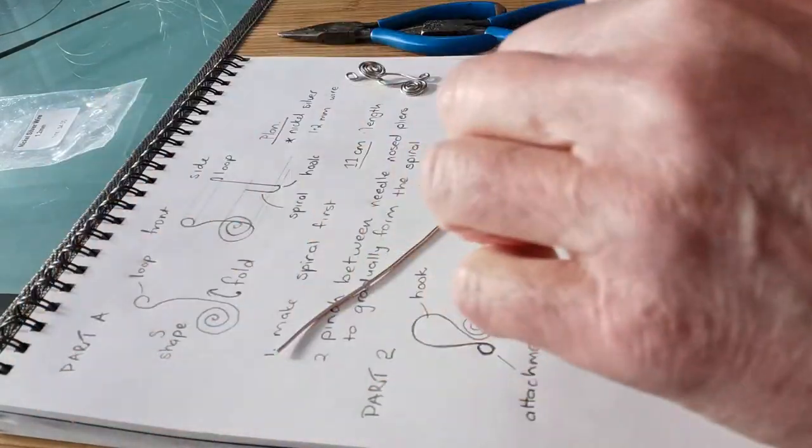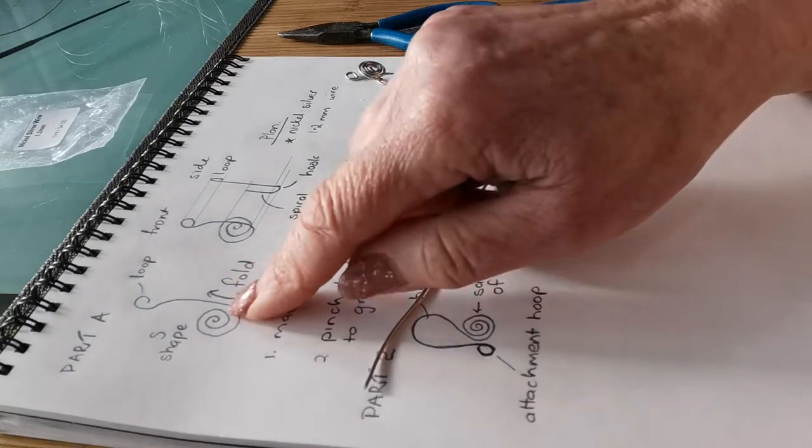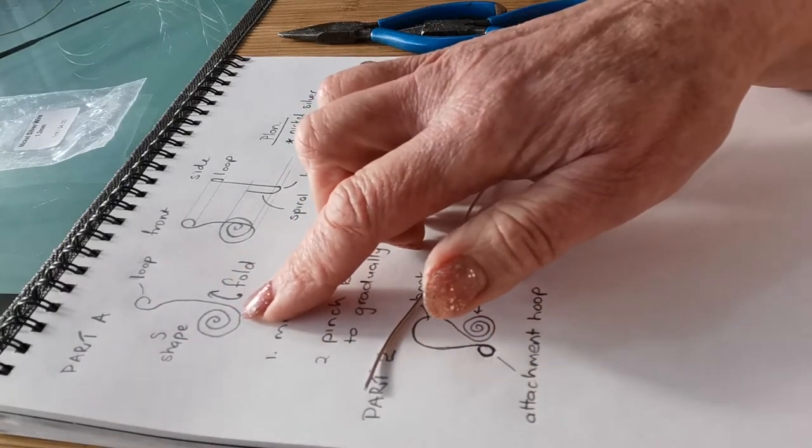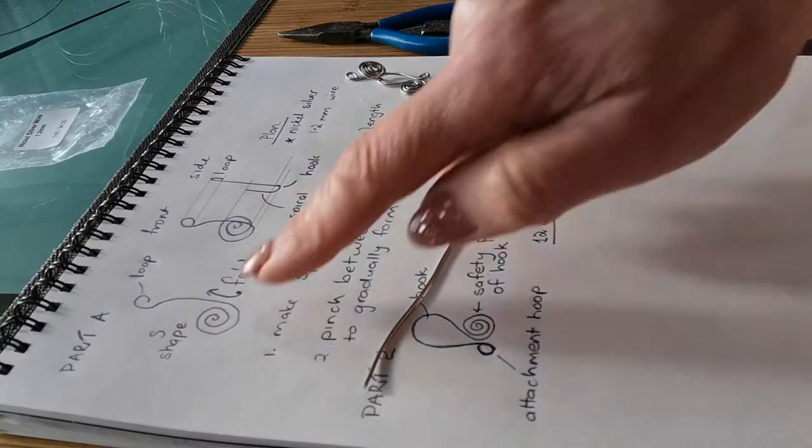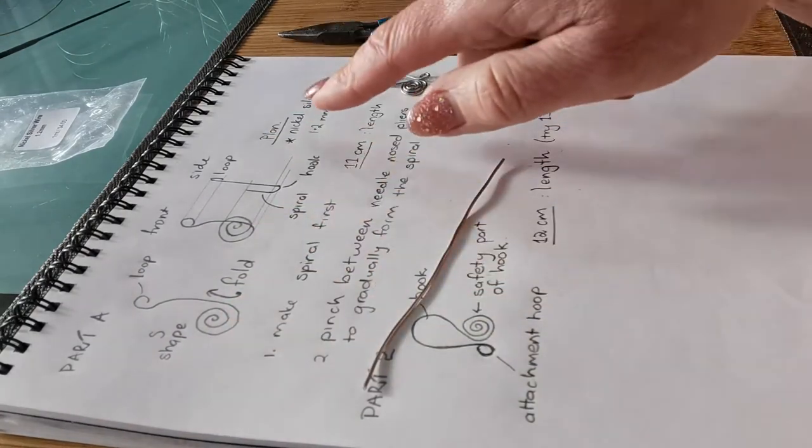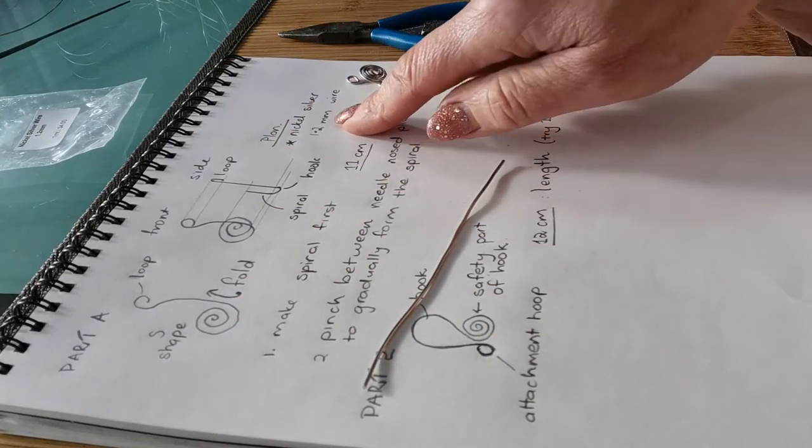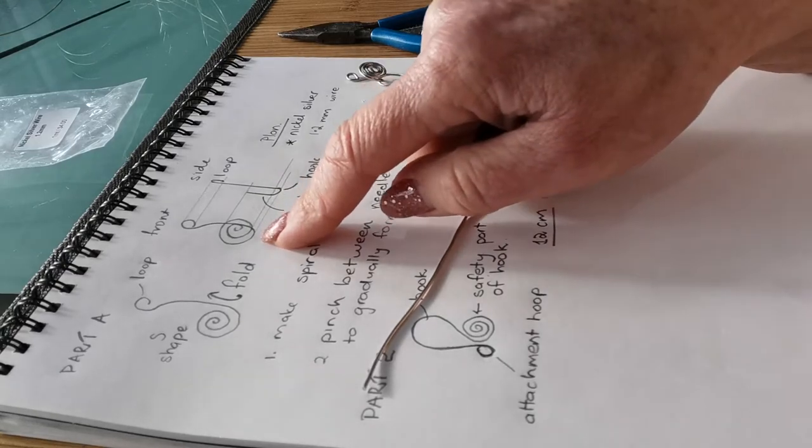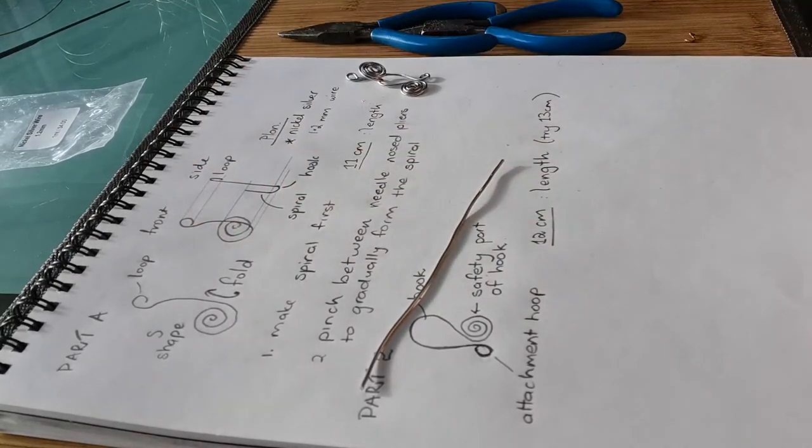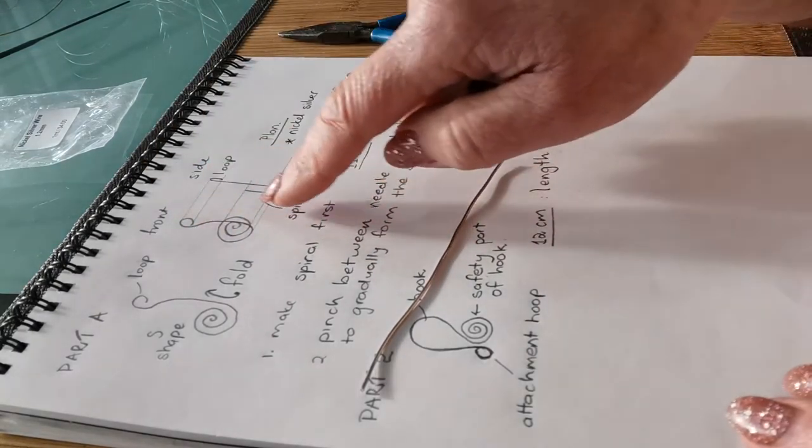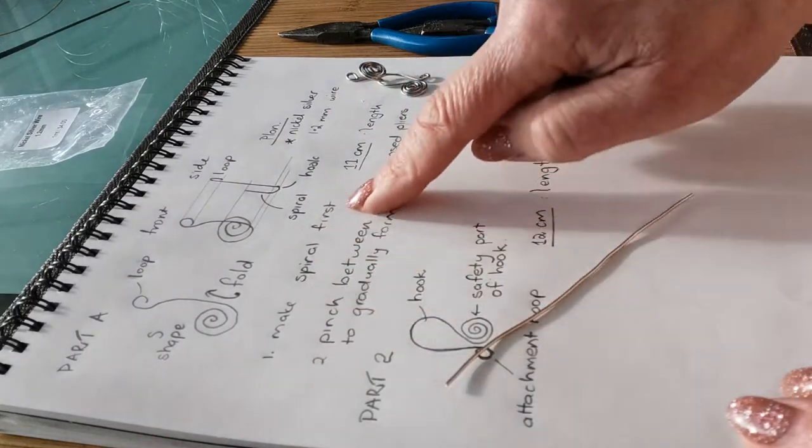We'll start off with the top part and I've made some notes here. Firstly, I've drawn the shape I want to make with some annotations. I have written the type of material that I'm using and I've drawn a front picture of it folded over and a side picture in orthographic projection.